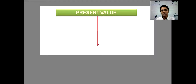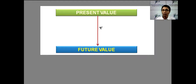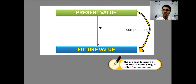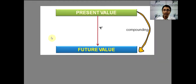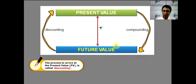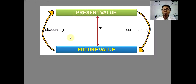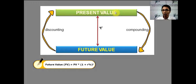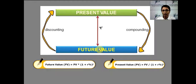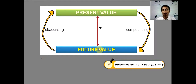At today's value, at some point of time t in the future, as money earns value it turns into the future value — a process called compounding. Now when we know the future value, in order to arrive at the present value, that is today's value, over the same time period t, the process is called discounting, because we strip the future value of its earnings to arrive at the present value. We know the formula for future value: PV times 1 plus r raised to t. Similarly, present value equals future value divided by 1 plus r raised to t. The same rule holds: r and t must be in the same units.